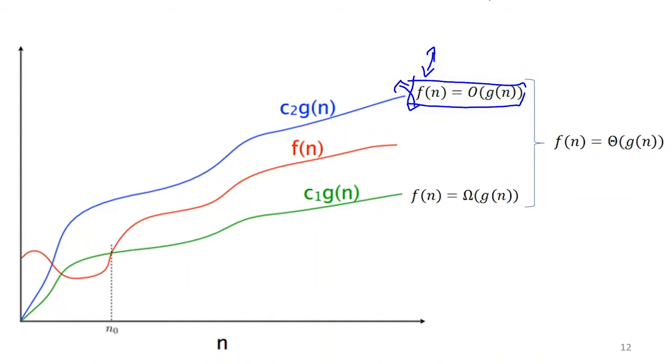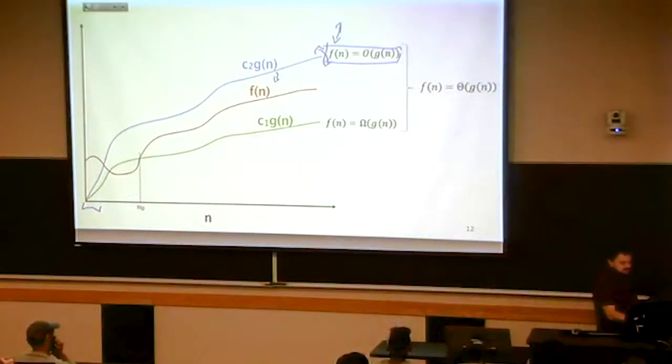So that eventually, so after some amount of time, so eventually, G of N is always going to be above F of N. If there is some way to do that, then we say F of N belongs to big O of G of N. So notice right here, we have an equal sign.